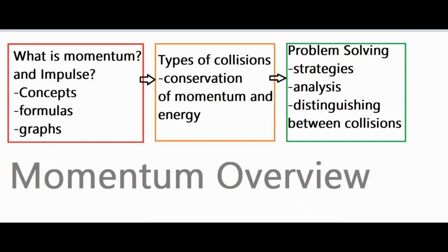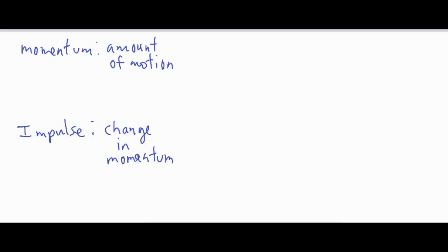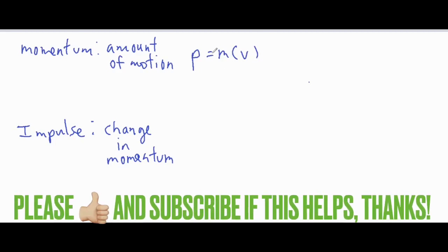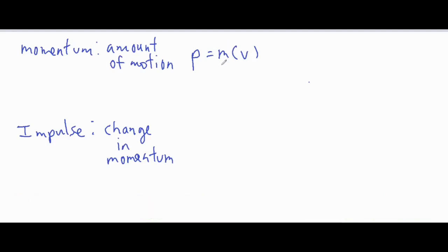So let's get started and talk about what momentum and impulse are. Momentum is the amount of motion that an object has — sometimes described as inertia in motion, though those definitions don't fully capture it. Momentum is represented by a lowercase p, and it is the product of mass and velocity. Mass is measured in kilograms and velocity in meters per second. Momentum doesn't have its own special unit; you combine those two and get kilogram meters per second.